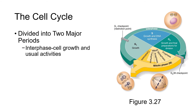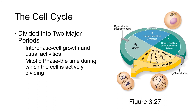The cell cycle is divided into two major periods. The first is interphase, shown in green in the figure on the right, which by far represents the majority of the cell's life cycle. During interphase, the cell is growing and carrying out its usual activities and functions. The mitotic phase, shown in yellow, is the time during which the cell is actively engaged in dividing. Let's look more closely at these two periods, starting with interphase.